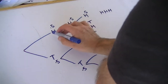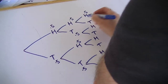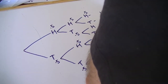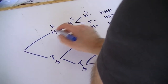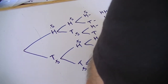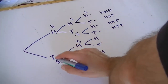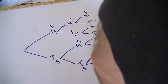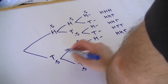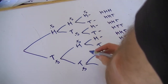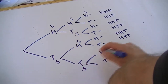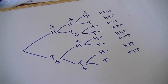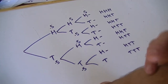So we have heads-heads-tails (HHT), heads-tails-heads (HTH), and heads-tails-tails (HTT). Then tail-heads-heads, tail-heads-tails, tail-tail-heads, and tail-tail-tail. There are eight possible outcomes in total — one, two, three, four, five, six, seven, eight — and each one is equally likely.